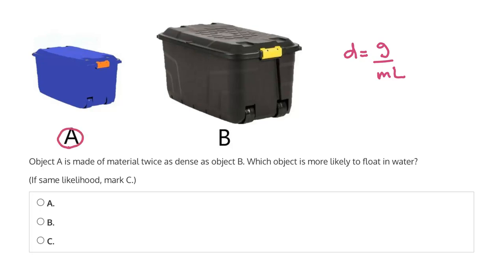So if object A is twice as dense as object B, well then it's much more likely to sink in water. And therefore, the object more likely to float in water is B.